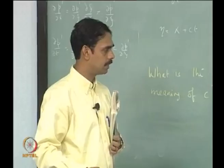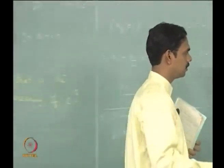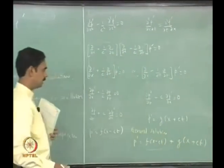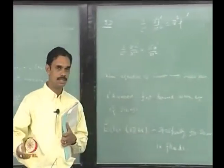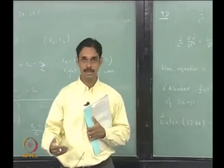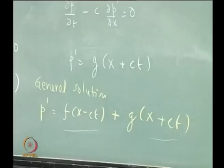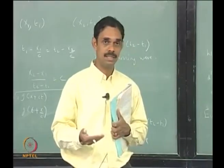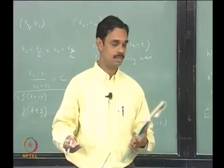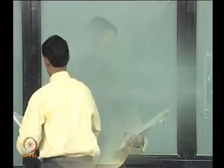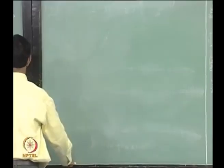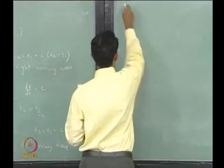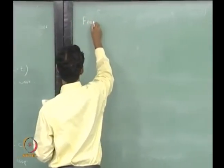Looking further at the solution p' = f(x − ct) or g(x + ct): along x − ct or x + ct the wave shape is constant. That means the wave shape does not change and the amplitude does not change — the wave just propagates. So we are looking at a 1D plane wave because we only have coordinate x. Let us look at the features of 1D plane waves.